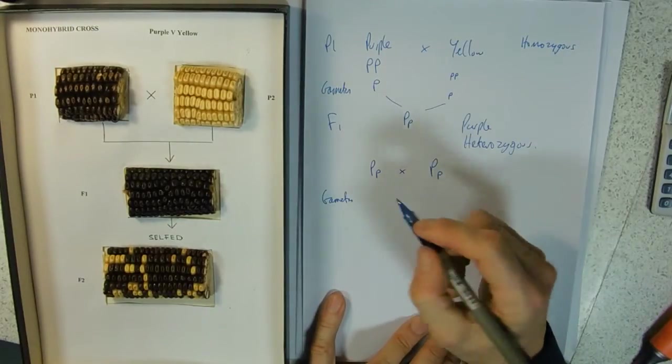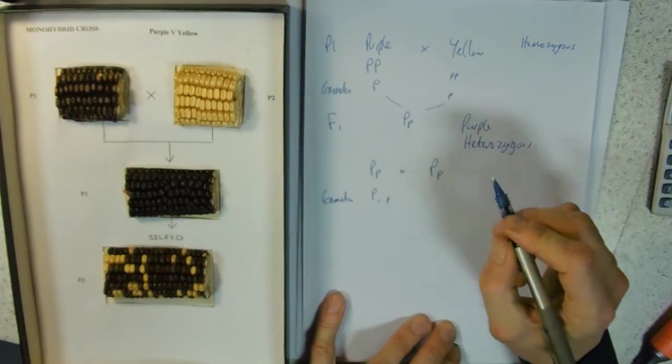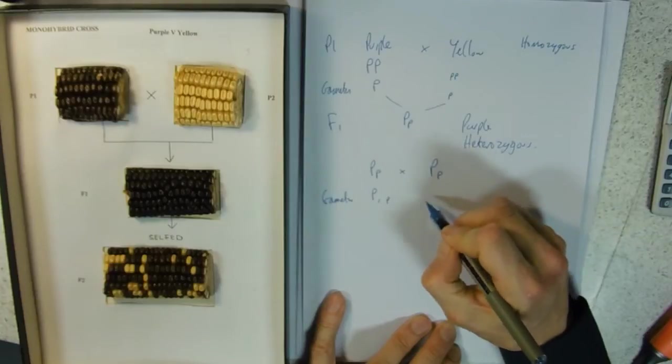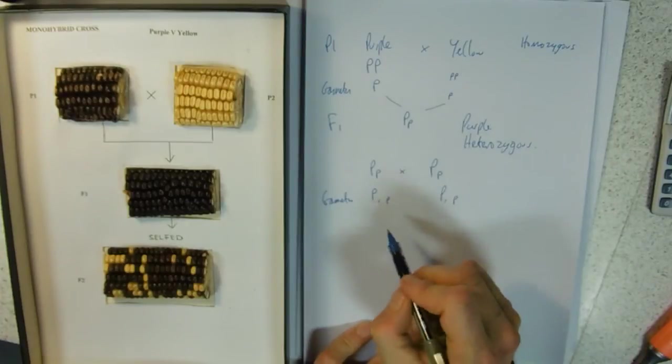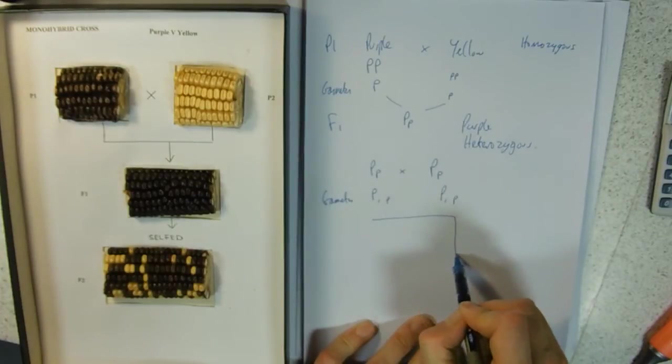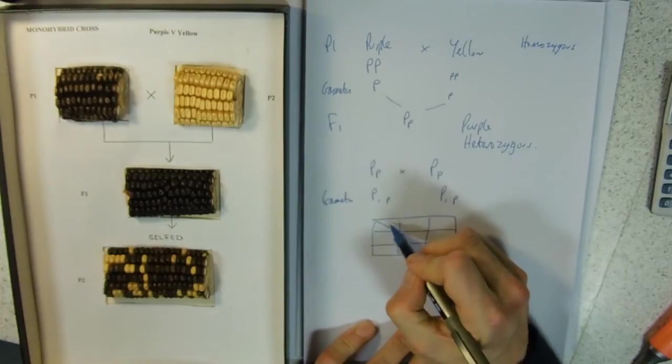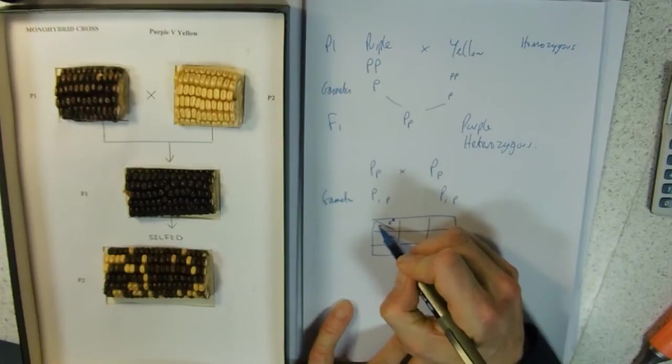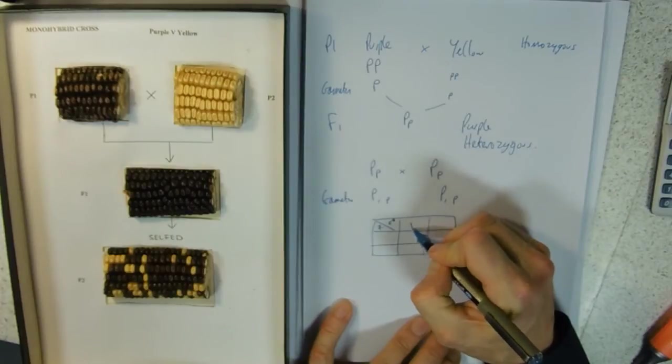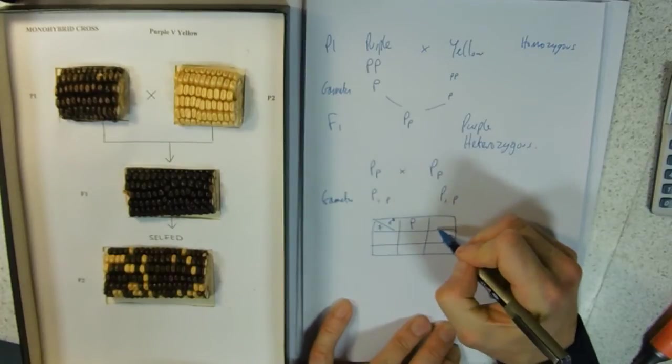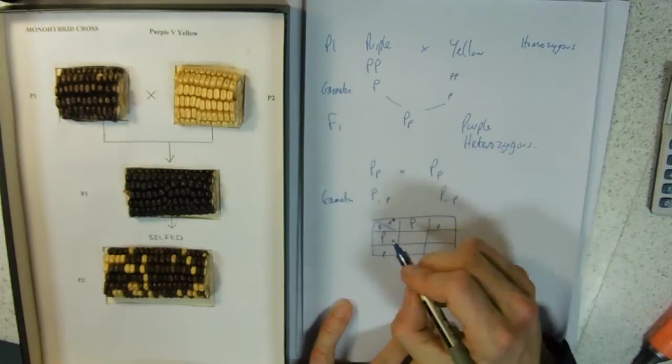Gametes - we've got choice now. We could have big P or little p. Again, we could have big P or little p. We need a Punnett square now. Traditionally we put the gametes into here - big P or a little p, big P and the little p - add them together.